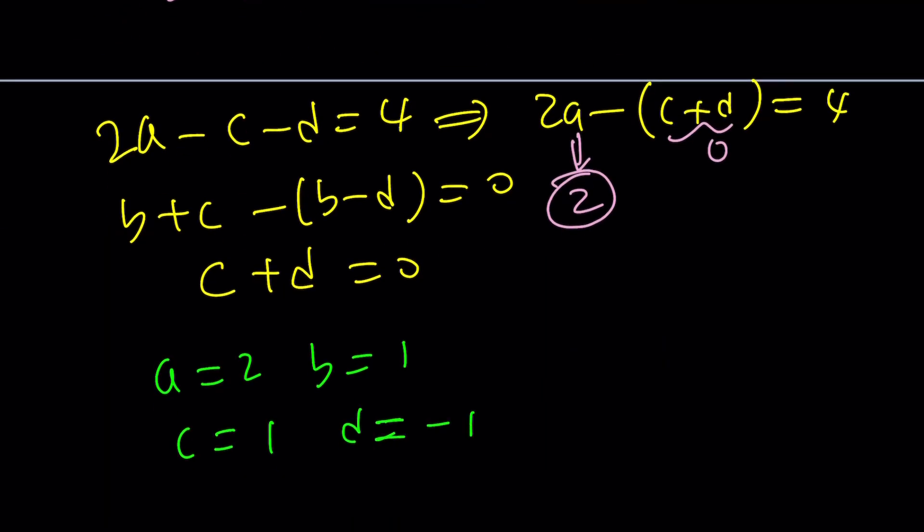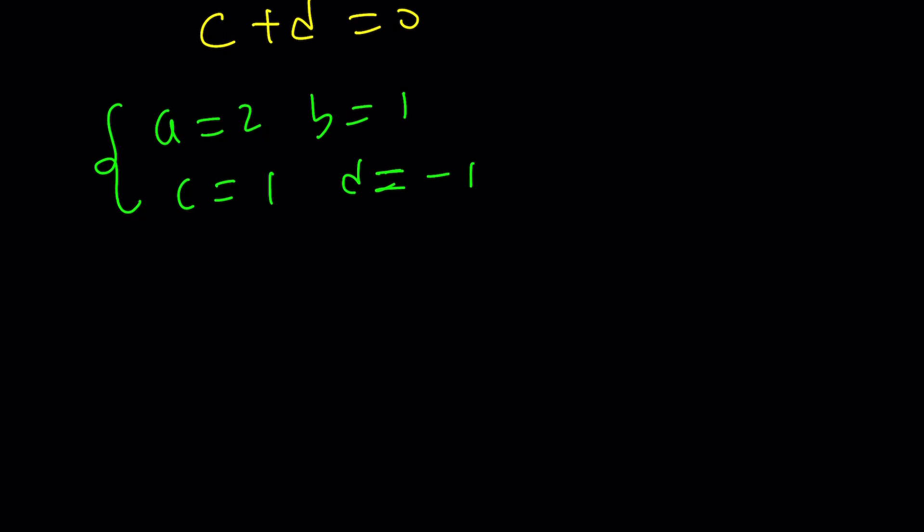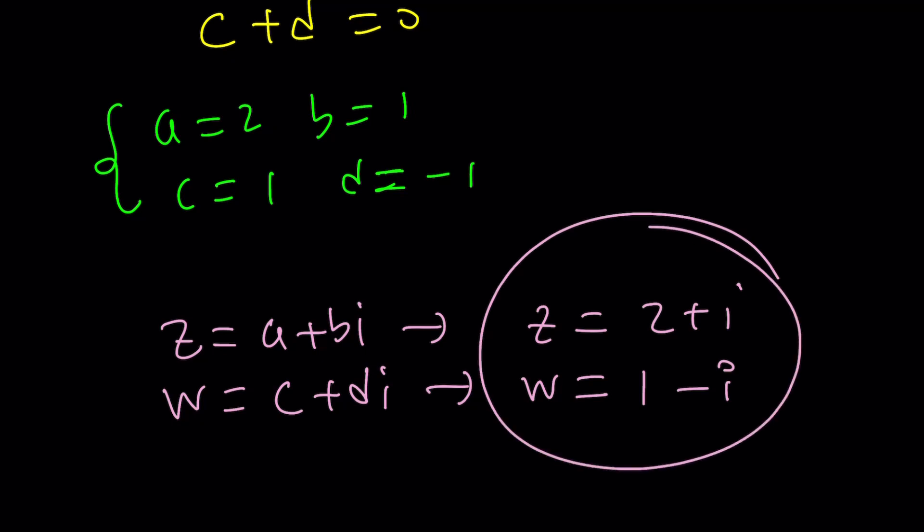Awesome. What does that mean? It means that Z is a plus bi. So, Z is 2 plus i, and W is c plus di, so W is 1 minus i. And that's going to be the solution, the ordered pair.